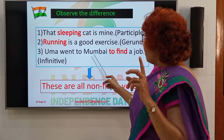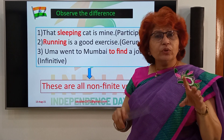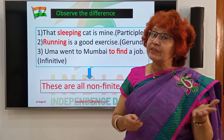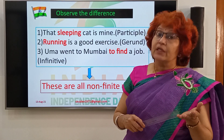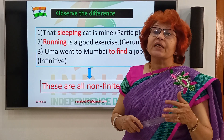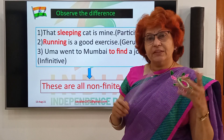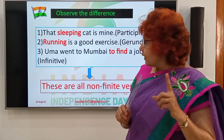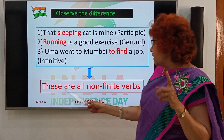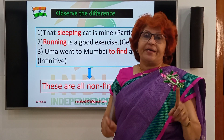Uma went to Mumbai to find a job. Here 'to find' is an infinitive. These three — infinitive, gerund, and present/past participle — are the non-finite verbs. These are all non-finite verbs.